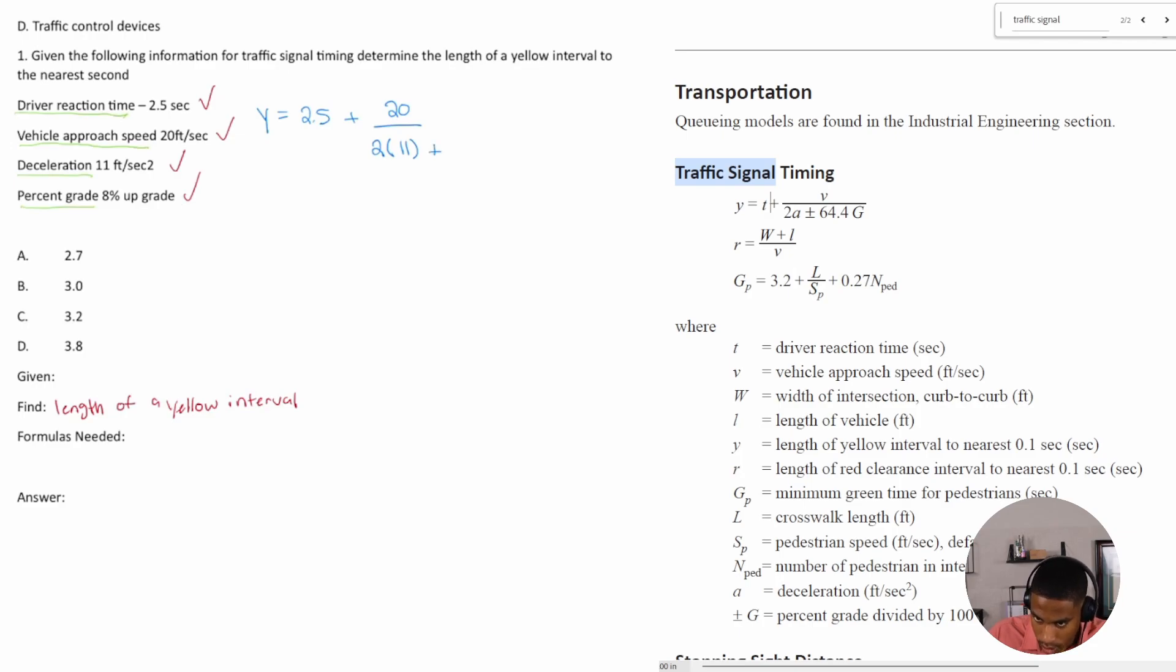What else? a plus 64.4 times g, which is our grade. Grade is key to note that our grade is 8%, but in decimal form that is 0.08, all over, and this is in parentheses.